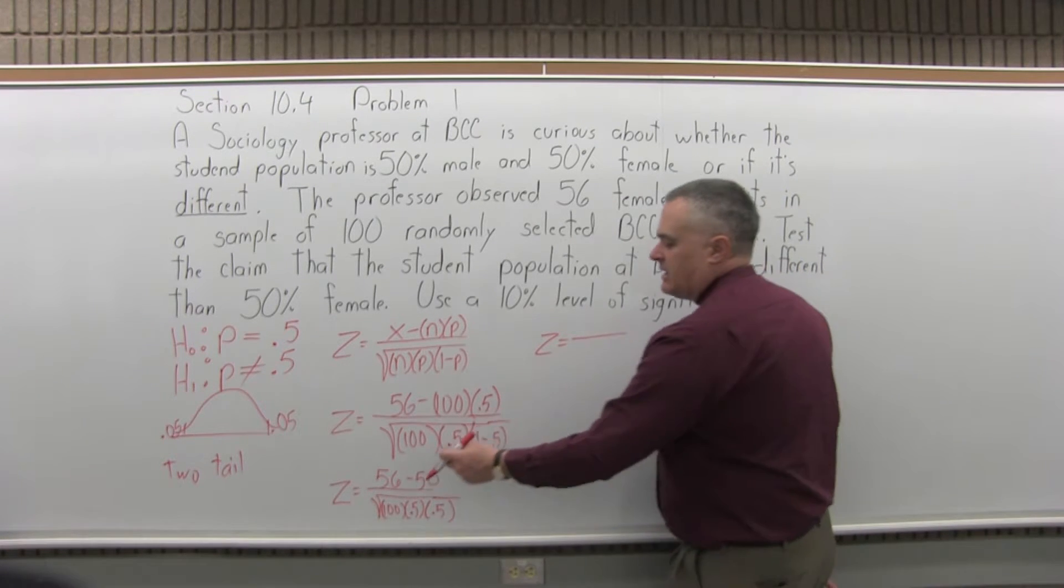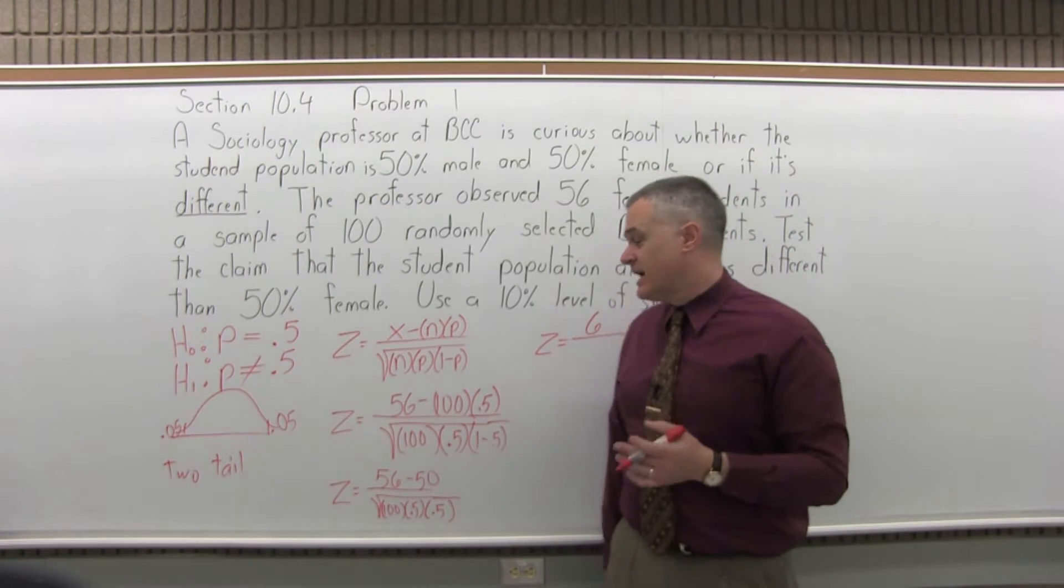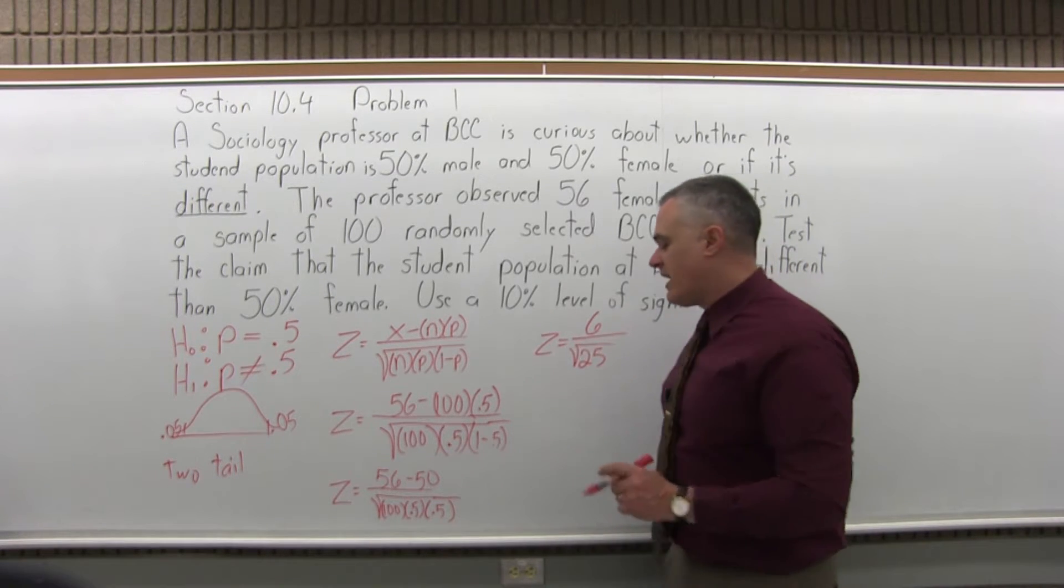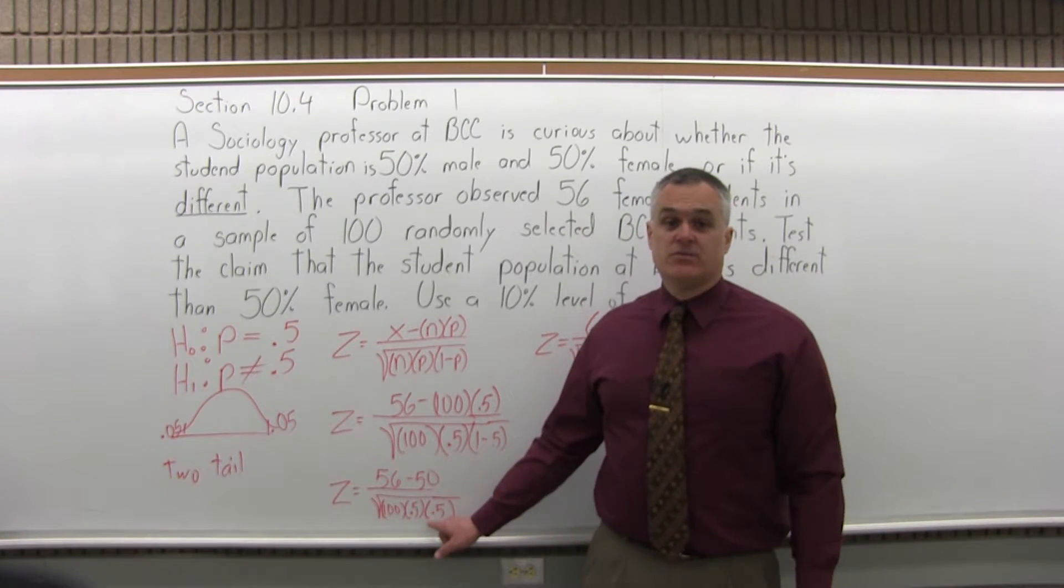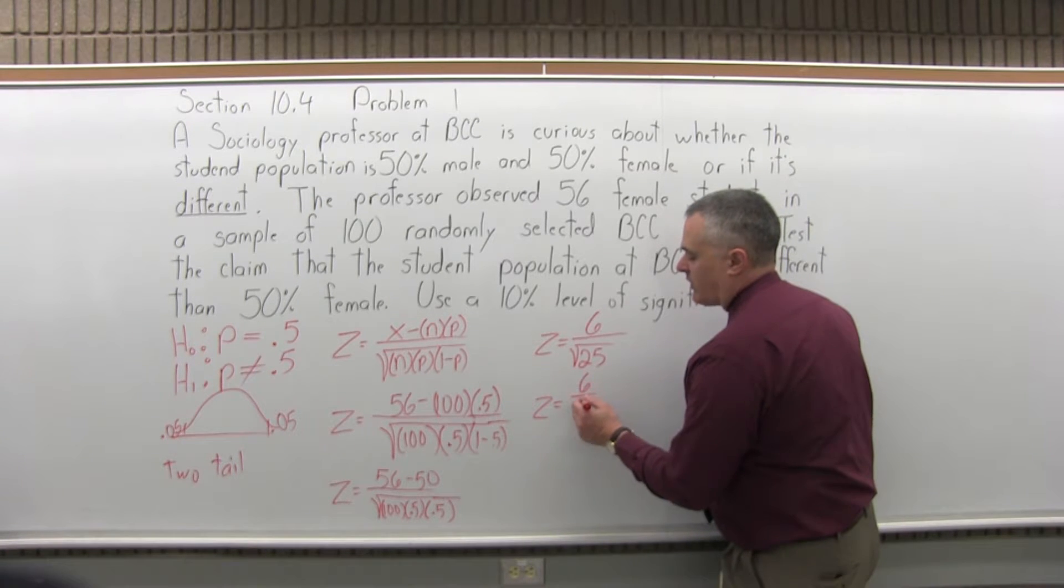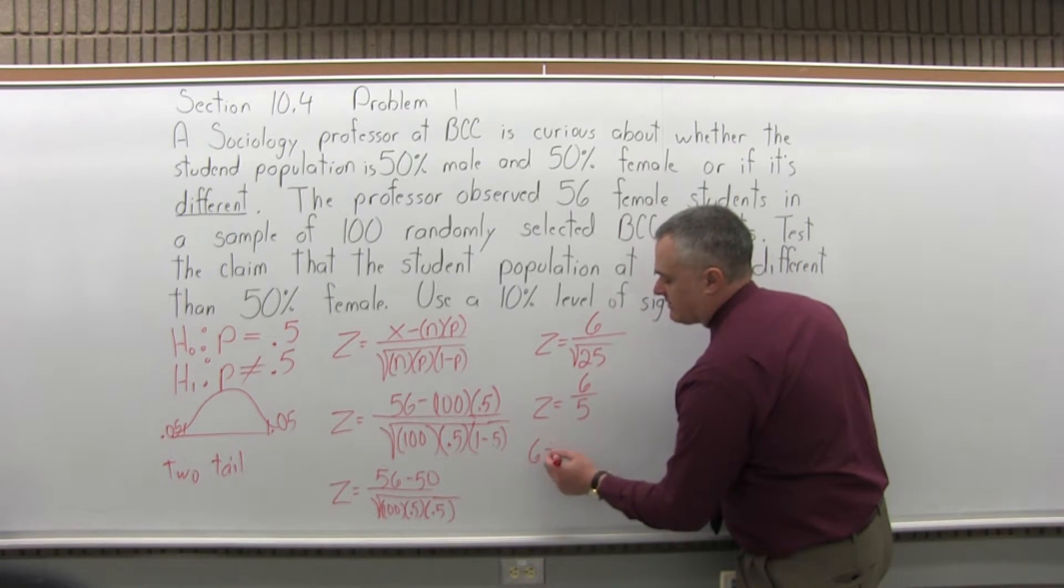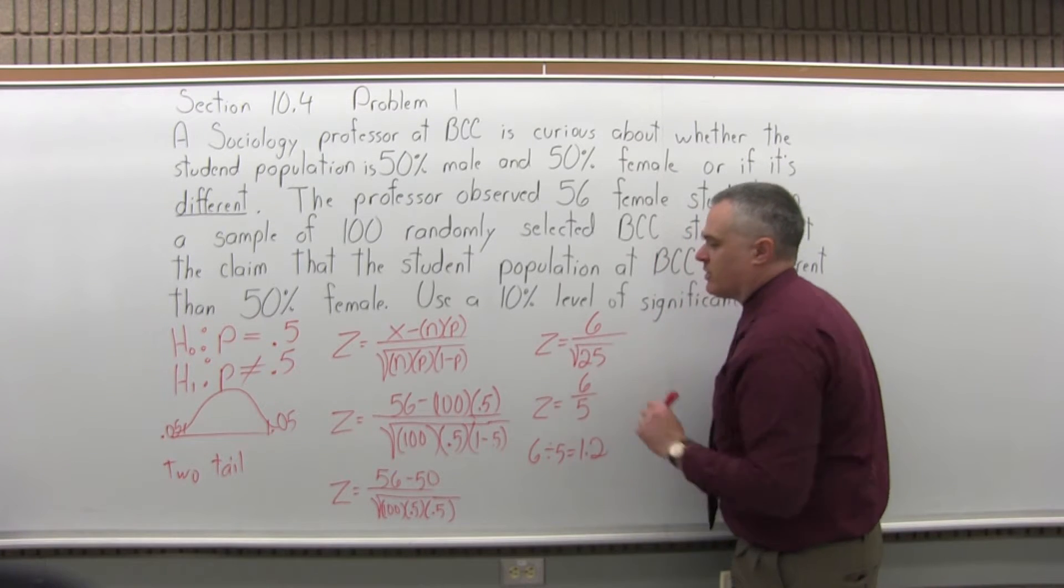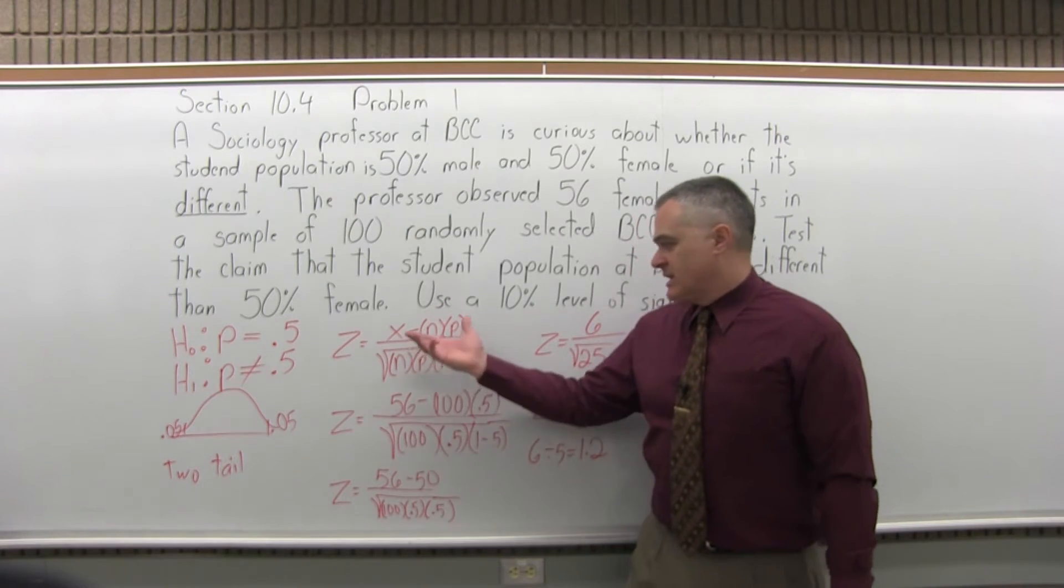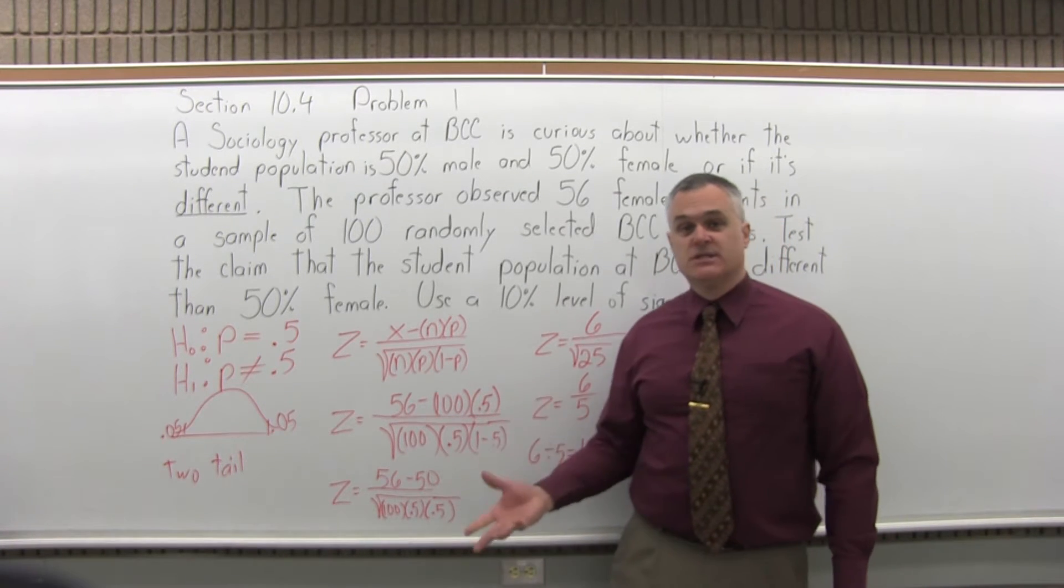z equals, in the numerator, 56 minus 50 is positive 6. You need to really pay attention to the sign. It's positive 6. And under the square root, if you multiply out those numbers, it's 25. 100 times 0.5 times 0.5 multiplies out to 25. So I have 6 over the square root of 25, which is 5. 6 over 5. With the calculator, 6 divided by 5 equals 1.2. So that was my fourth step. I calculated z and got an answer of 1.2.